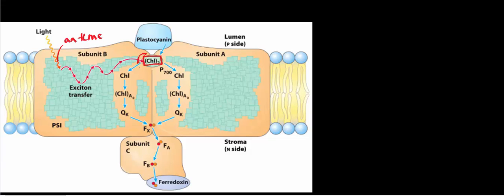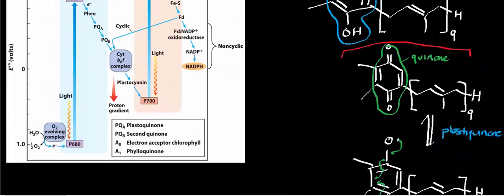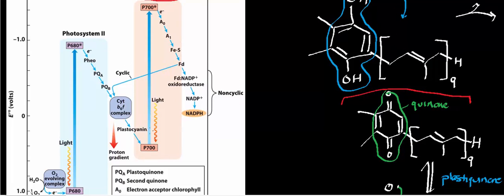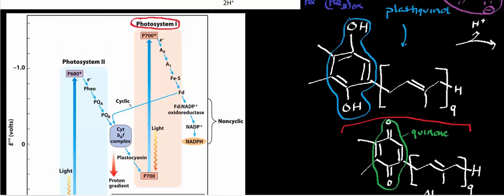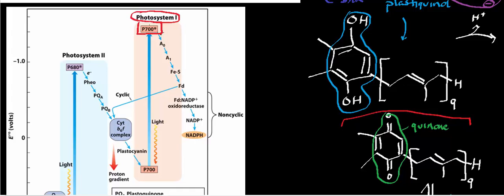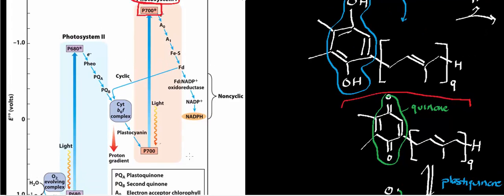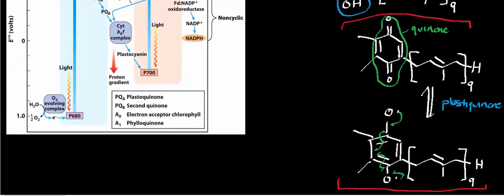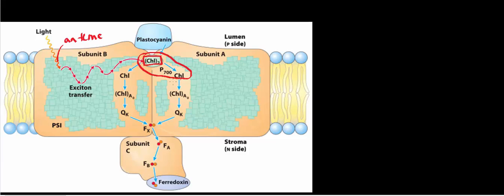This structure is the P700, and it gets raised in energy. When P700 receives the excitons from the antenna molecules and gets raised in energy, it transfers an electron to A sub-zero. A sub-zero is an electron acceptor chlorophyll. So the special pair P700 donates an electron to a chlorophyll, which ultimately donates an electron to this special electron acceptor chlorophyll denoted A sub-zero.